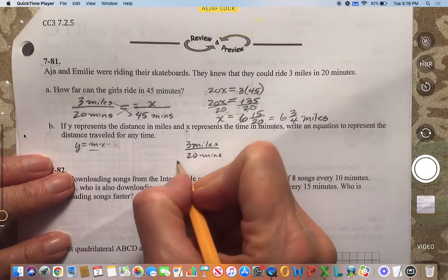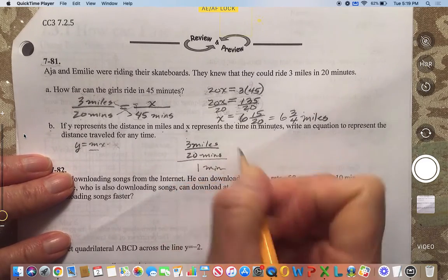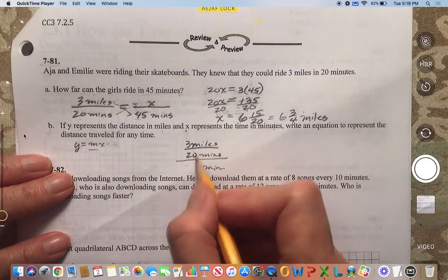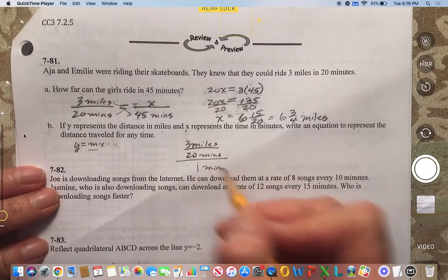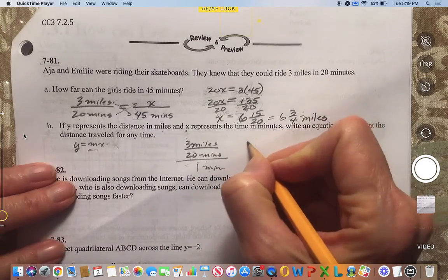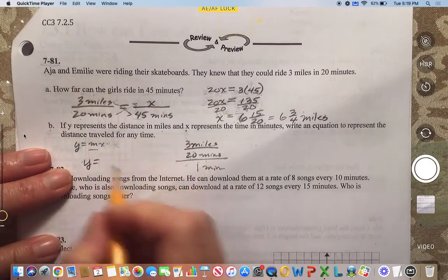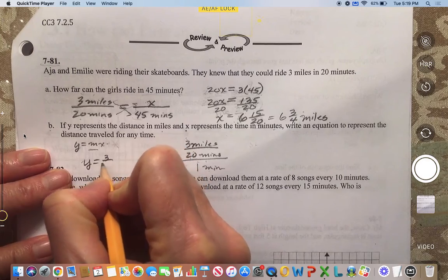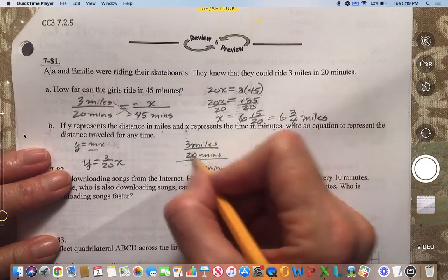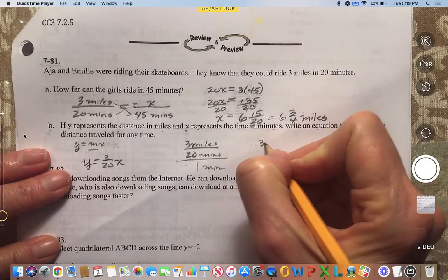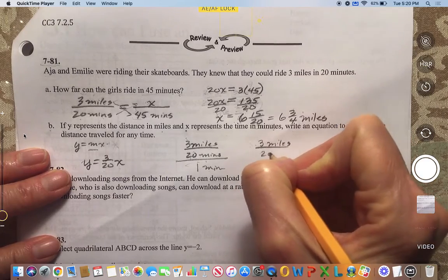And I know that if I just put that over one minute, I've turned it into a rate. So I can actually just leave it as 3/20ths and I can go ahead and write this equation y equals 3/20ths times x, because we know if we multiply 3 miles over 20 miles.